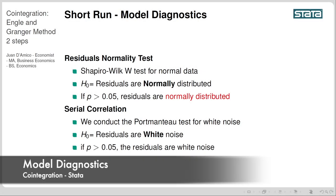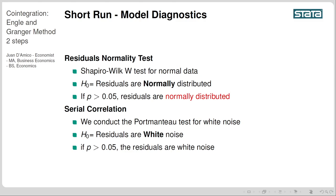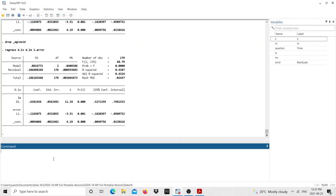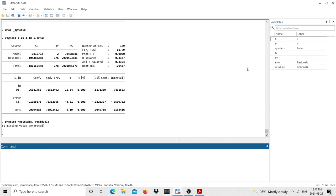Now we perform model diagnostics. We start with the normality test of the residuals using the Shapiro-Wilk test, where the null hypothesis is that residuals are normally distributed. Back in Stata, I first obtain the residuals of the short-run regression by typing 'predict residuals, residuals'.